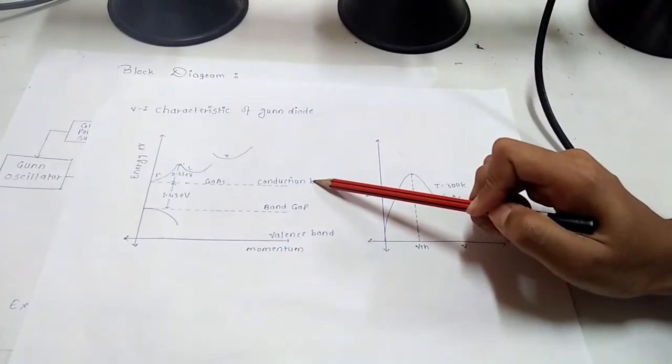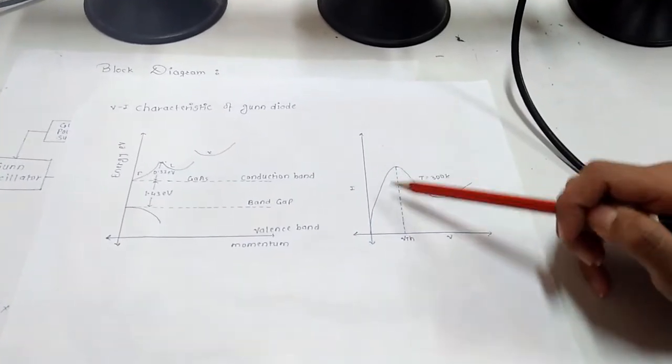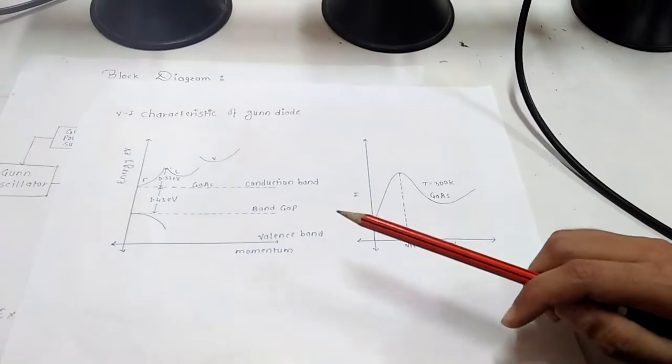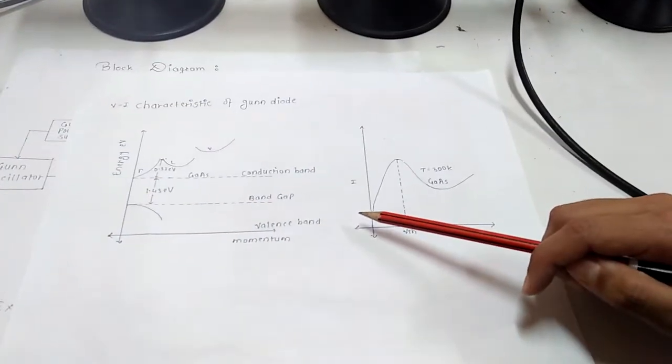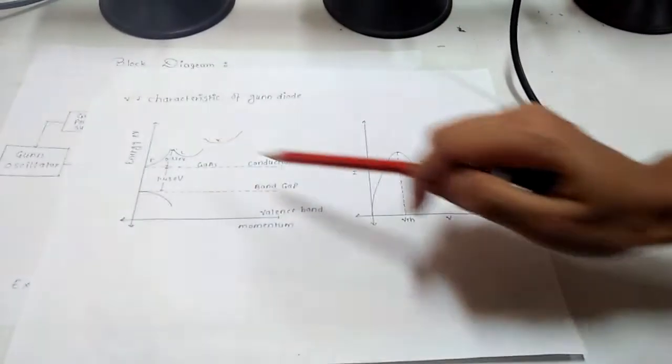Due to which the mass of electrons increases, results in decrease in mobility and also results in decrease in current. This effect is called transfer electron effect and is responsible for the VI characteristic of Gunn diode.